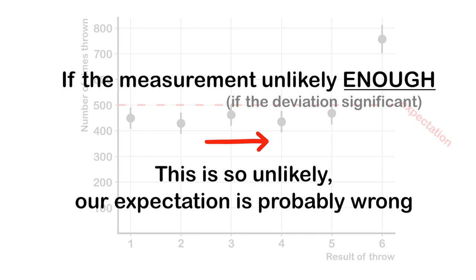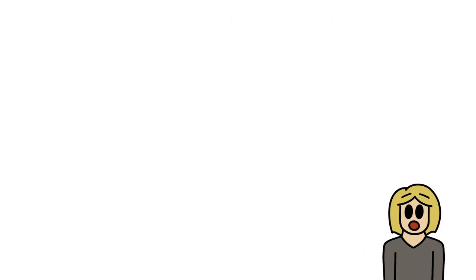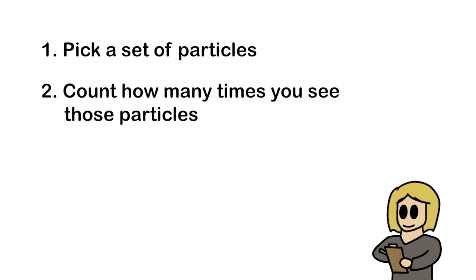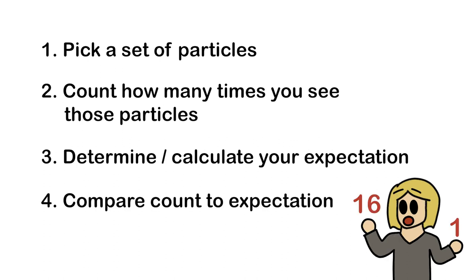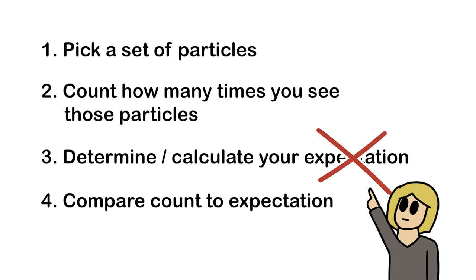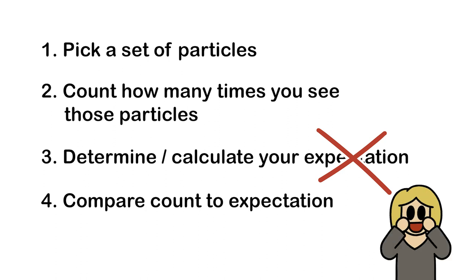Essentially, the same procedure is used in the interpretation of data in particle physics as well. We pick a final state and count how many times we see it. We also determine how many times we would expect to see that final state if the particle we are looking for would not exist. If our count differs enough from the expectation that there is no new particle, we can say that our expectation of no new particle is probably false, and that we thus discovered a new particle or some new physics effect that we didn't take into account.